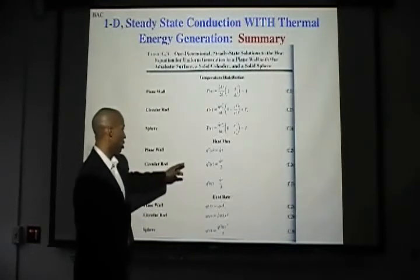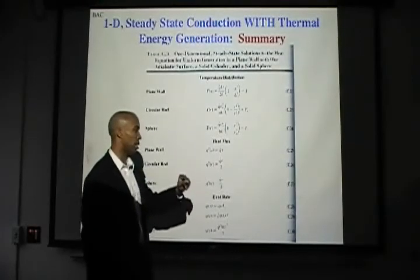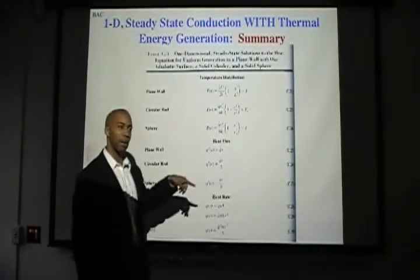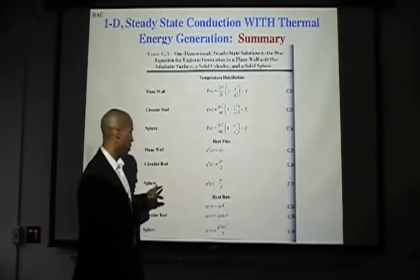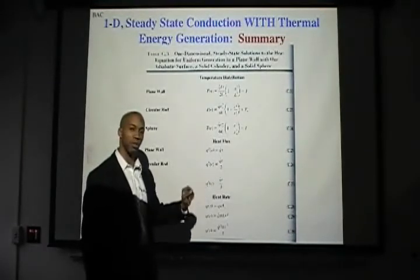And then for a circular rod, you have the heat flux equals Q̇ times the radius divided by 2. And you have a sphere where the heat flux equals Q̇ times the radius over 3.